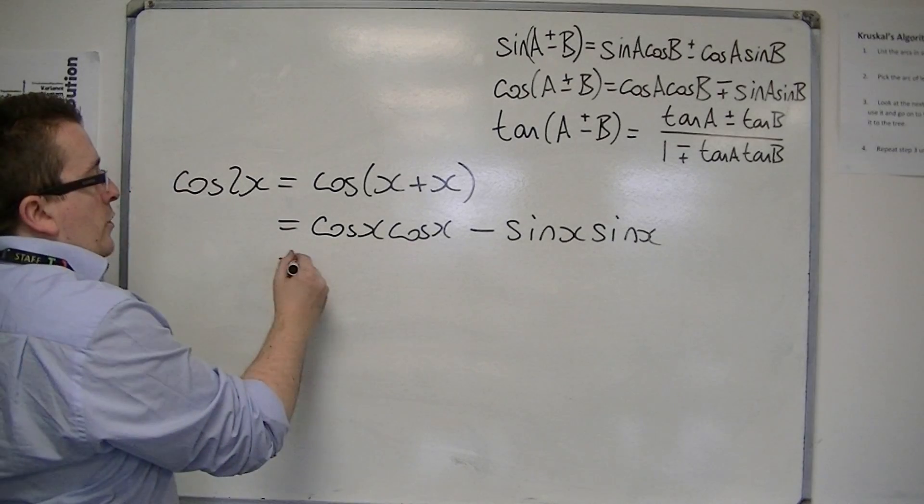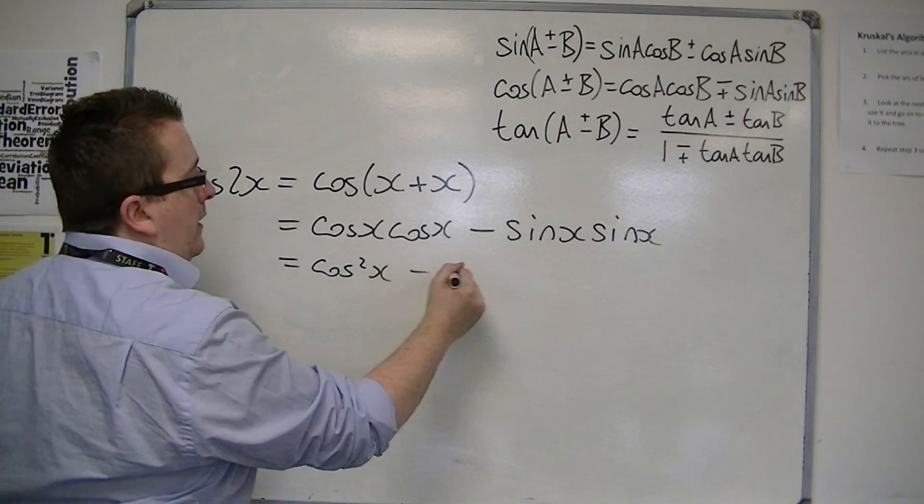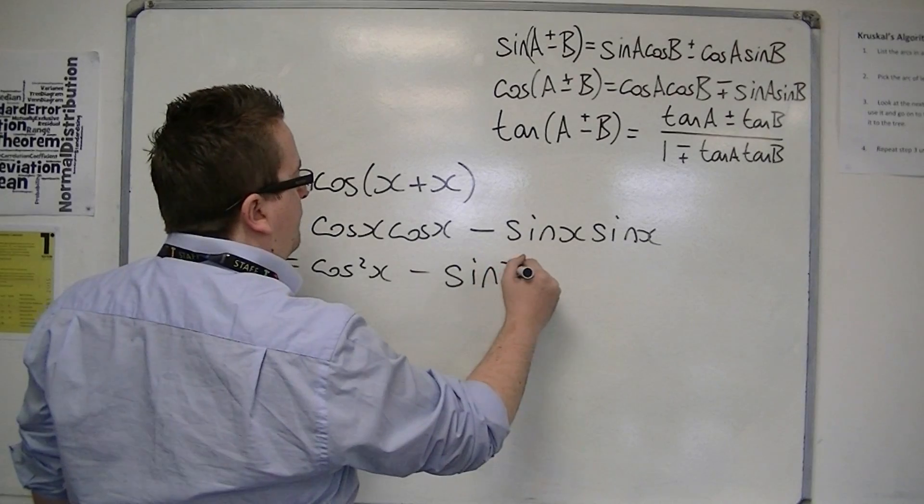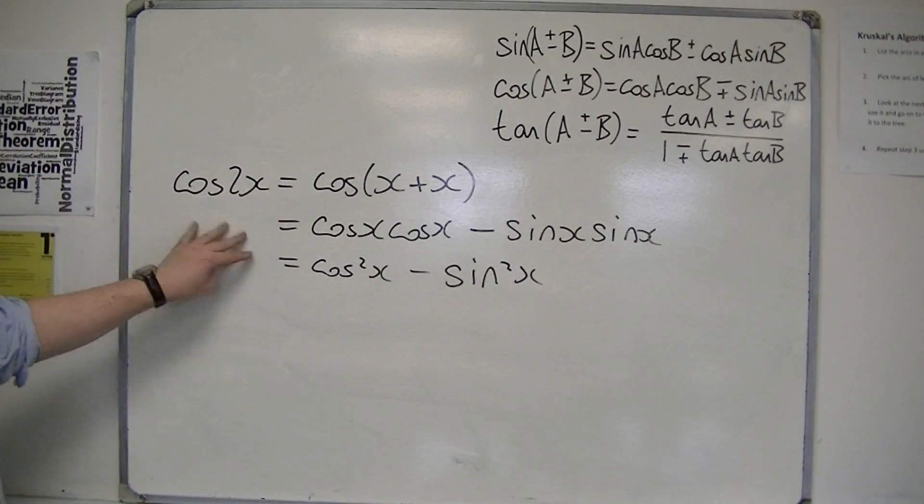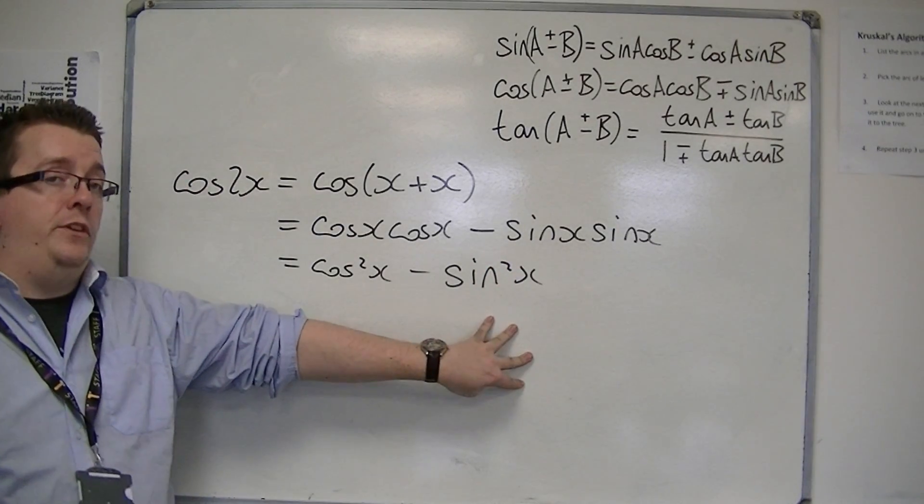So cos x cos x, well that's just cos squared x, and that's sin squared x. So cos 2x is cos squared minus sin squared.